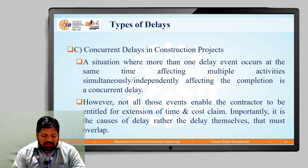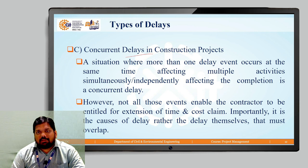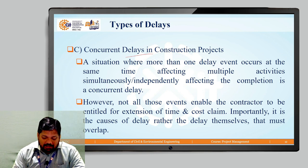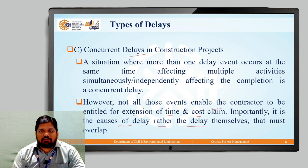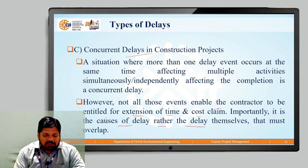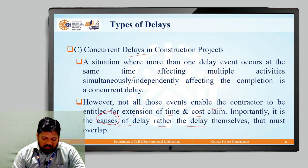The next type is concurrent delay — a situation where more than one delay event occurs at the same time. For example, critical delays along with excusable delays happening simultaneously. Not all such events entitle the contractor to an extension of time and cost claim. Importantly, it is the cause of delay rather than the delays themselves that must be understood, as one particular cause may lead to multiple delays.